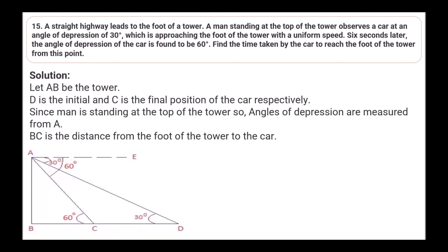Question 15: A straight highway leads to the foot of a tower. A man at the top observes a car at an angle of depression of 30°, approaching the foot with uniform speed. 6 seconds later the angle of depression is 60°. Find the time taken by the car to reach the foot from its second position. AB is the tower. D is the initial position and C is the final position of the car.